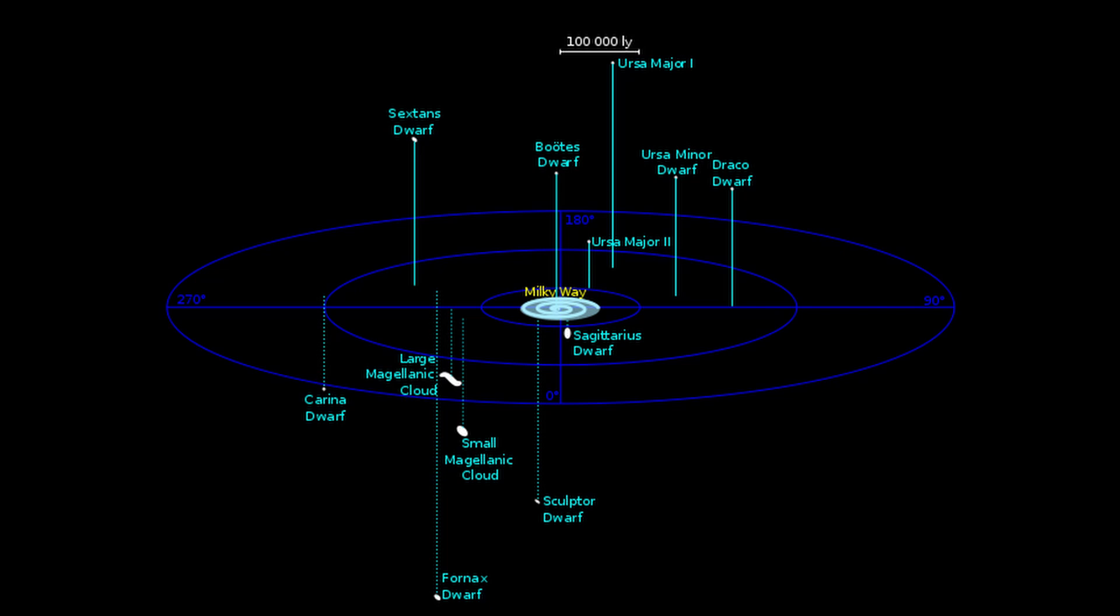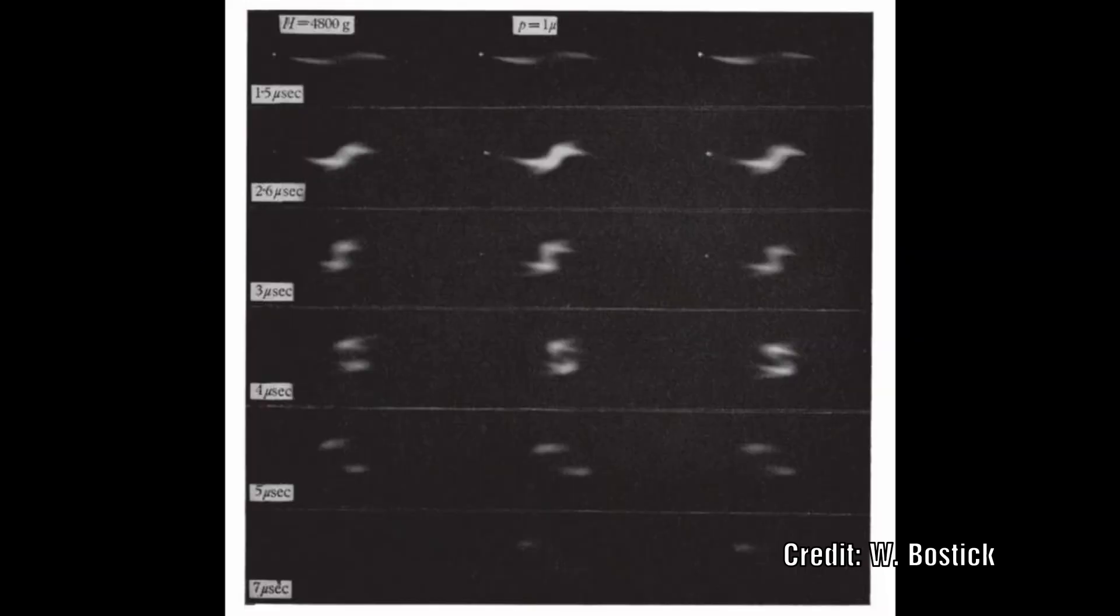Now alternatively if we look at Bostick's work on plasmoids, we can see that in most cases galaxies should repel each other, meaning that this should not actually happen often. He also showed that in some cases the plasmoids could end up being attracted and joined together.